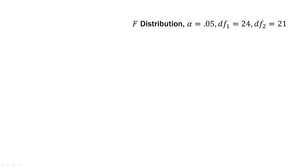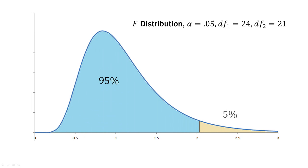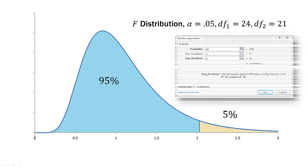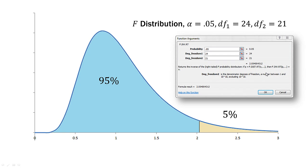So remember, we're using an F distribution with an alpha level of .05, a numerator degrees of freedom of 24, and a denominator degrees of freedom of 21, based off our sample sizes. On the left-hand side of the distribution we have our 95%, and on the right-hand side we have our 5%. Our F critical value is 2.054.